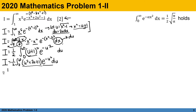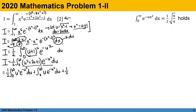Distributing u squared plus 2u plus 1 to the exponential of negative u squared, we get: one half of the integral from 0 to infinity of u squared e to the negative u squared du, plus the integral from 0 to infinity of u exponential of negative u squared du, plus one half the integral from 0 to infinity of the exponential of negative u squared du. Our original integral I is now divided into three integrals.